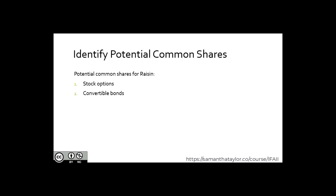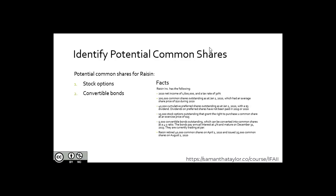Now let's identify all potential common shares (PCS). Looking at our key facts, we see our common shares — those are not PCS since they are already common shares. Then we see our cumulative preferred shares outstanding. Are those potential common shares? The answer is no. If we had said cumulative convertible preferred shares, then yes, these would be potential common shares. But preferred shares on their own are not potential common shares — they are just preferred shares and their own type of equity.